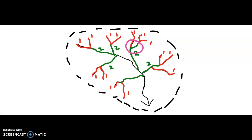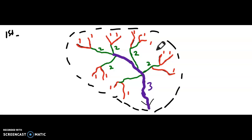Let us determine the third-order stream. From this particular diagram, we only have one third-order stream, though sometimes you could have multiple. Let us determine the first, second, and third orders. How many first-order streams do we have? Let us count: 1, 2, 3, 4, 5, 6, 7, 8, 9, 10, 11, 12, 13, 14. We have 14 first-order streams.